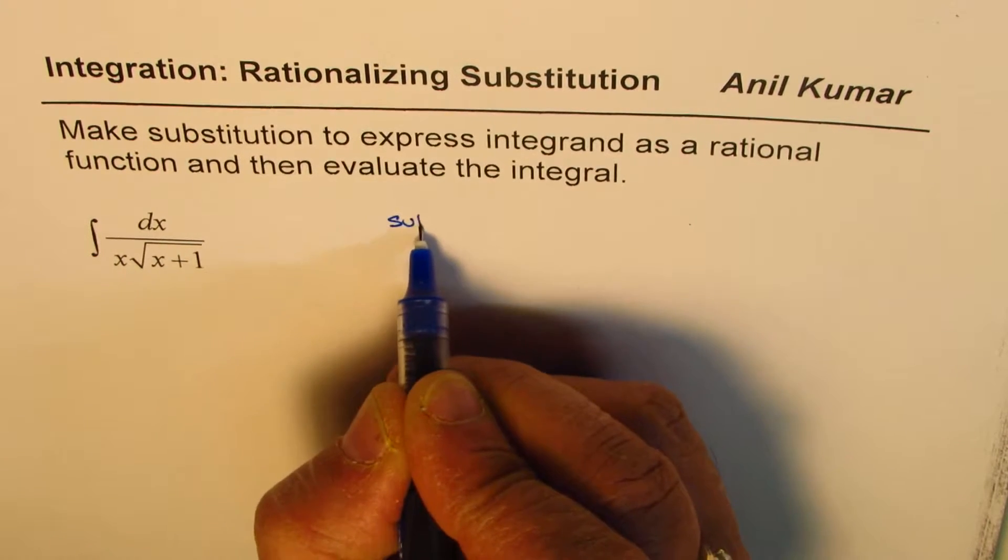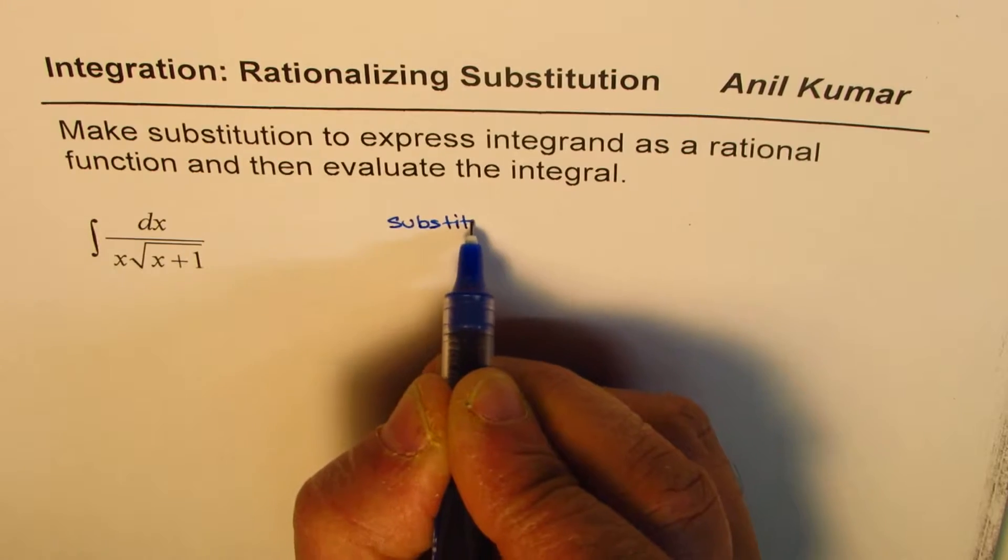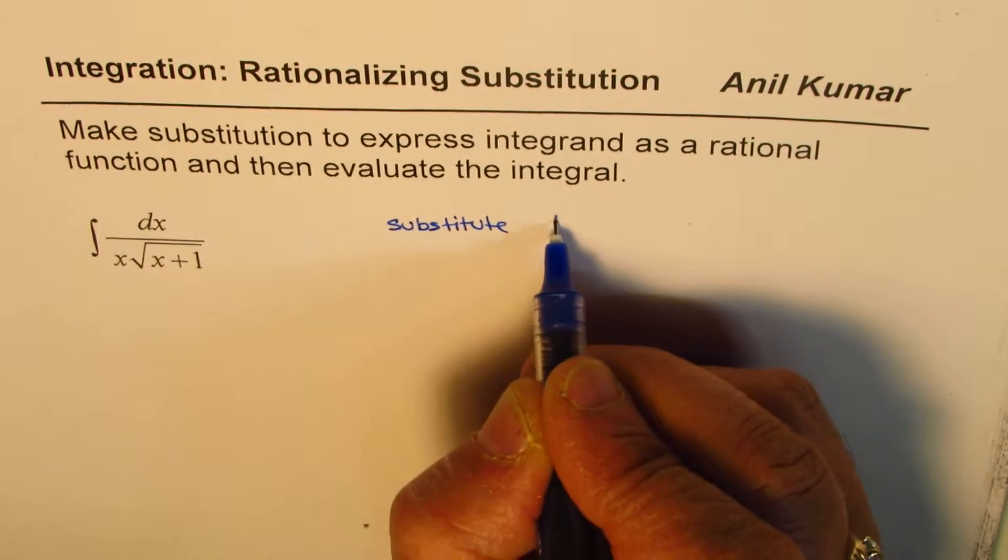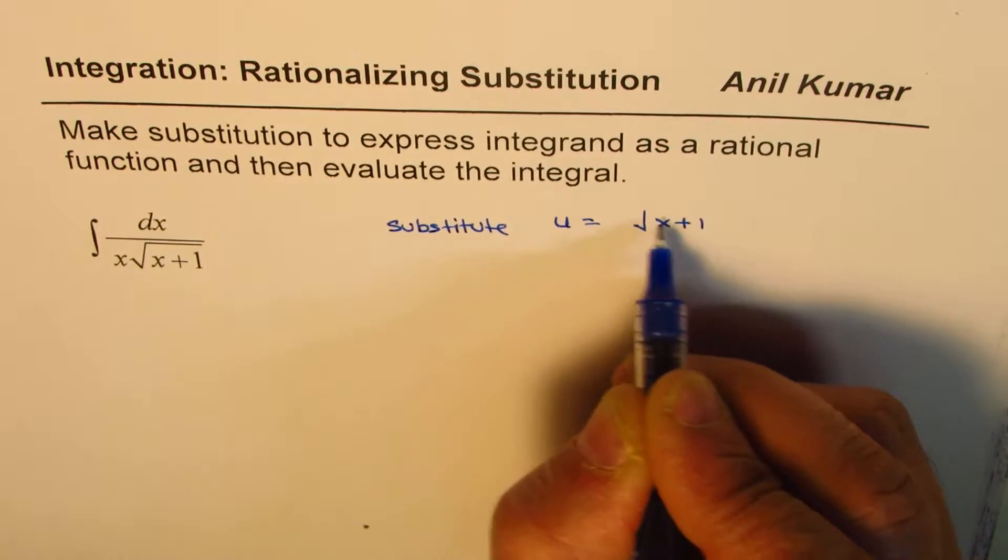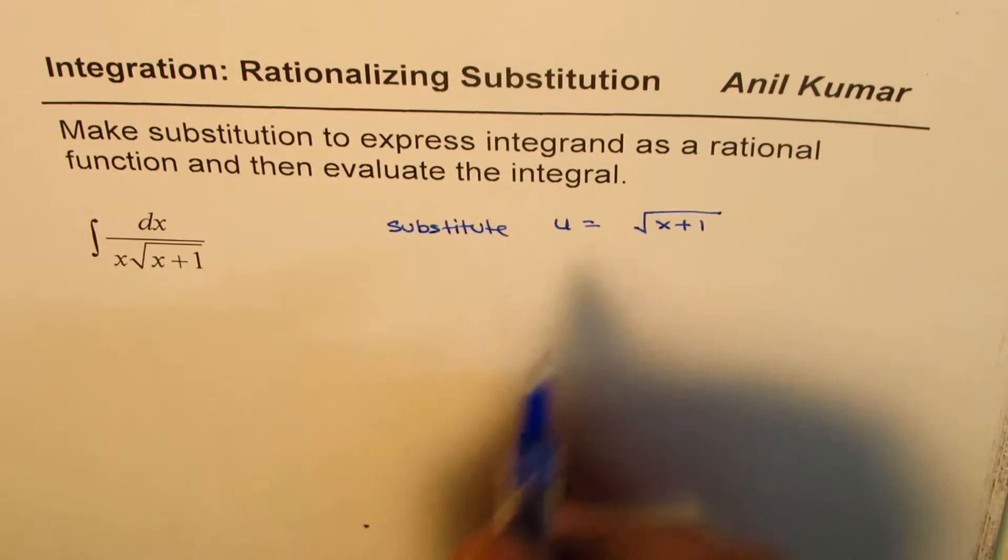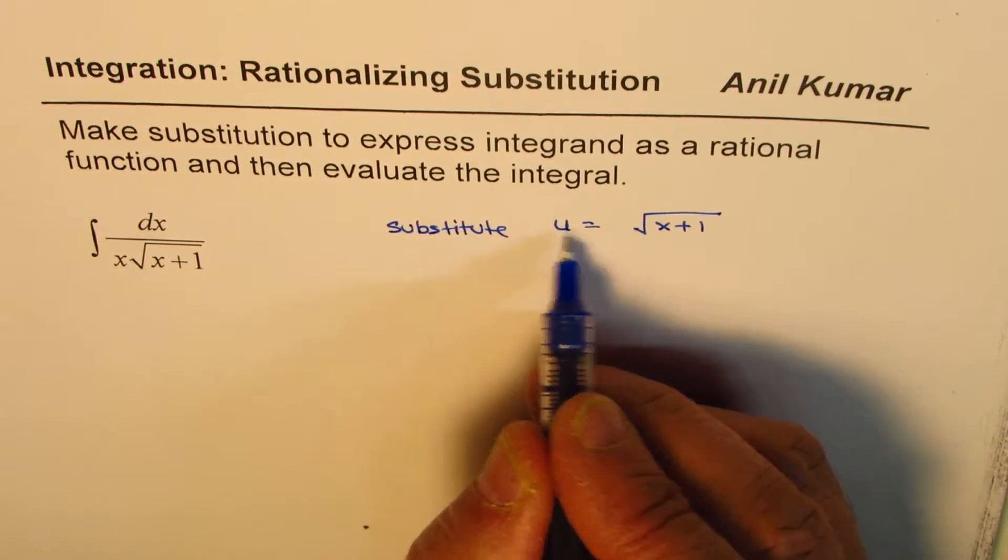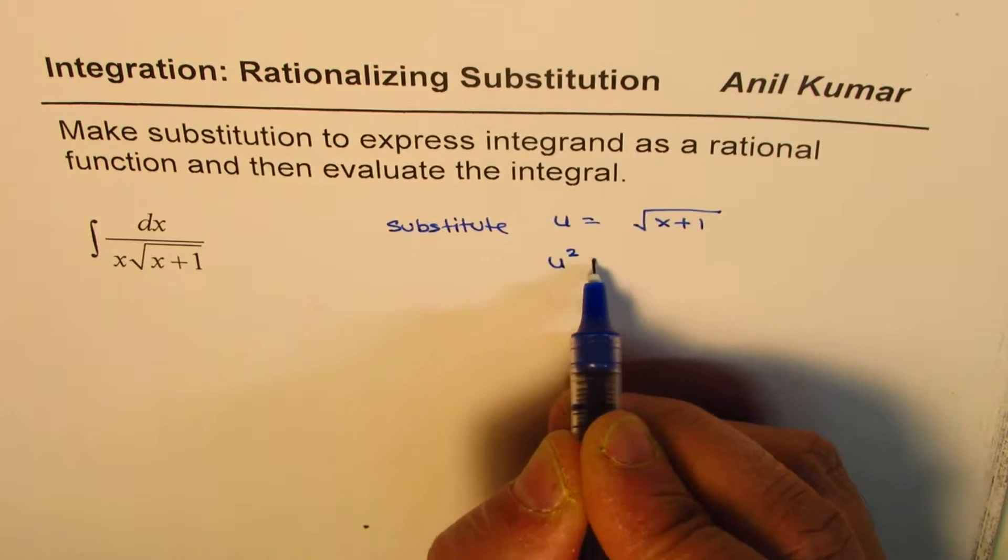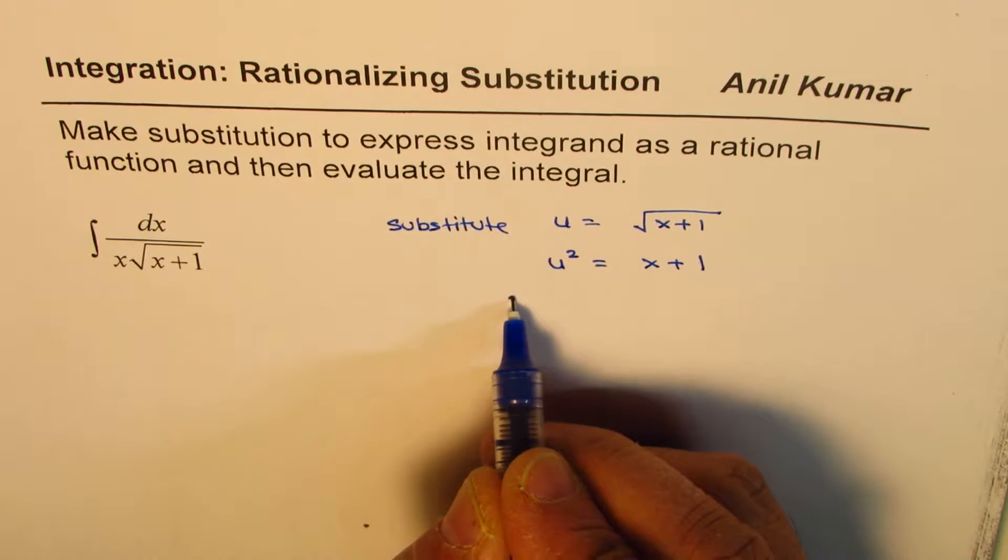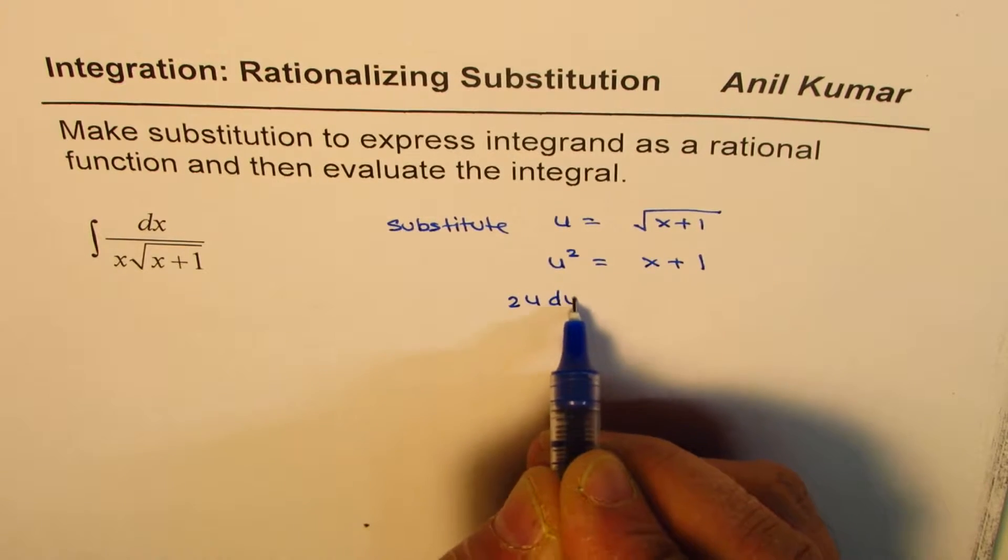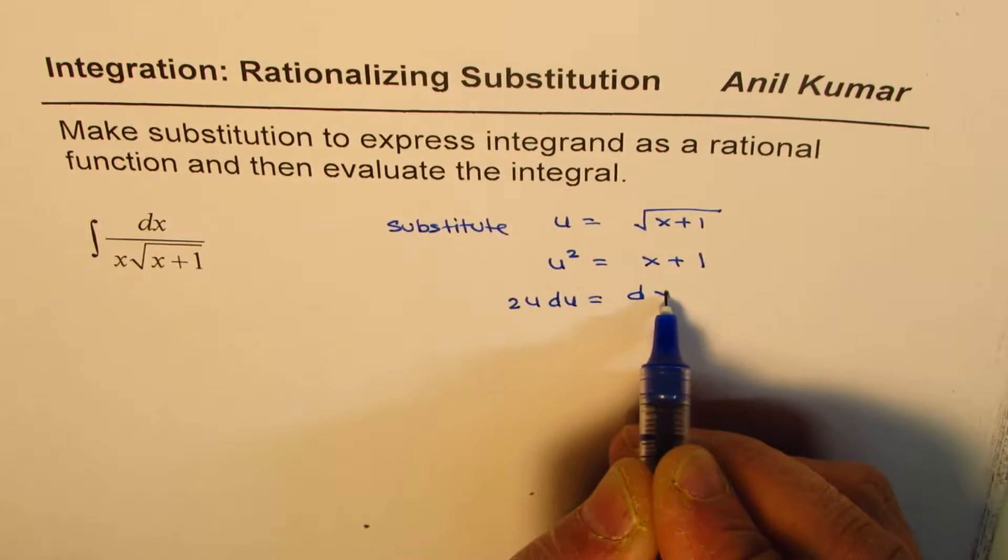Let's substitute u equals to square root of x plus 1. So in that case if I square both sides I get u square equals to x plus 1 and if I take derivative I get 2u du equals to dx.